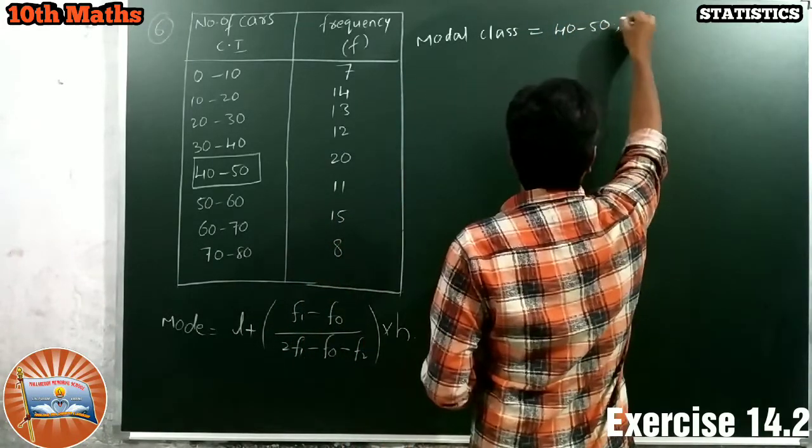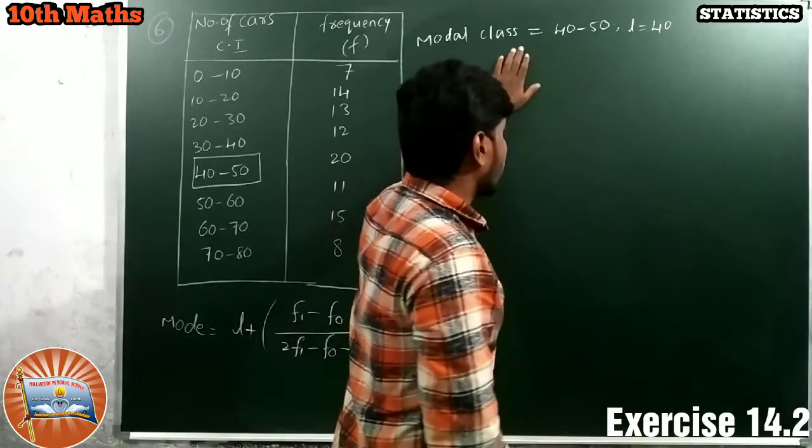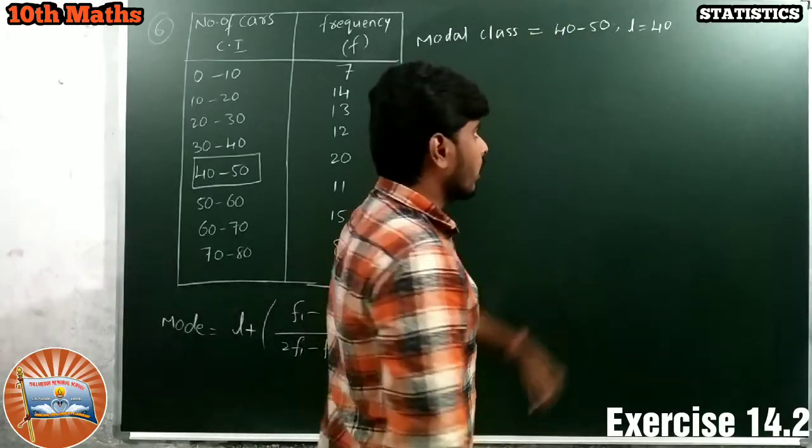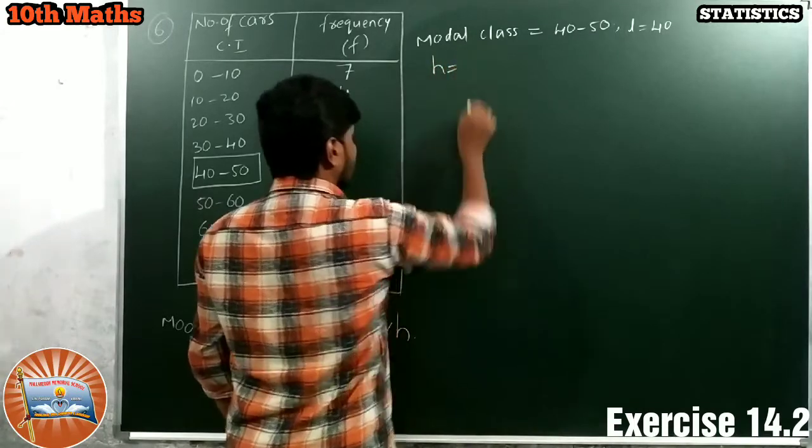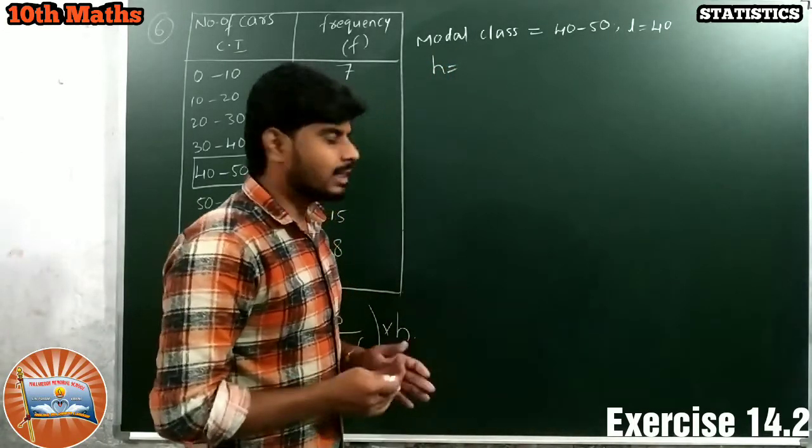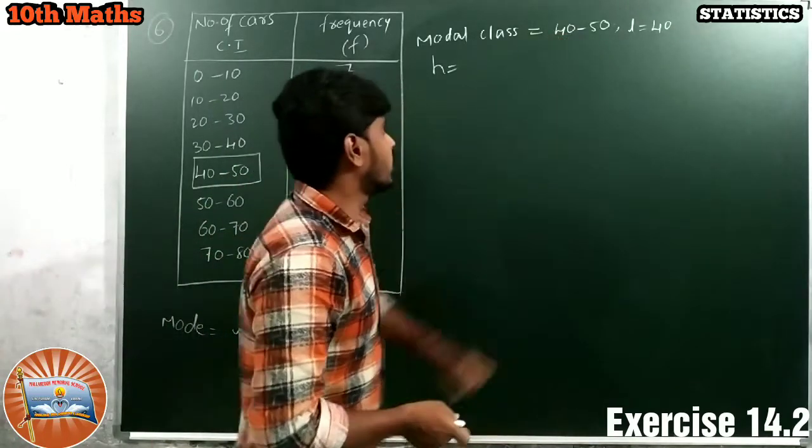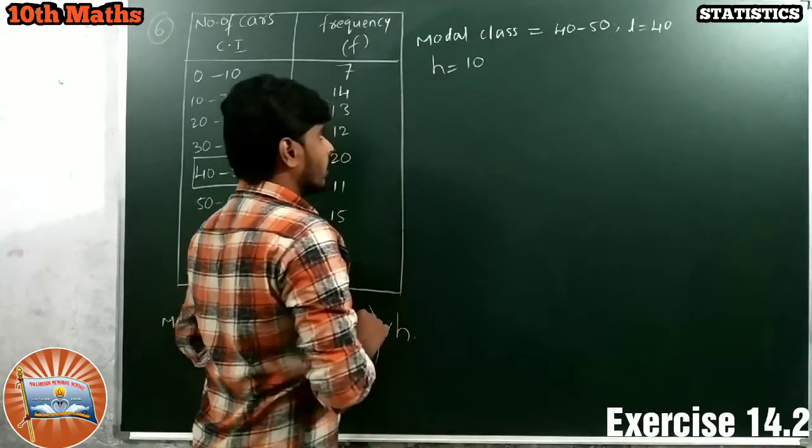L is 40. The modal class lower limit is called L. Next, what is H? That is the modal class size. It is 10. Next, we have to find F1, F0, F2.